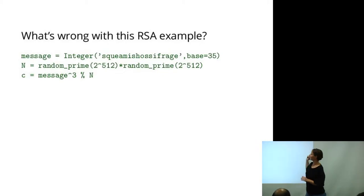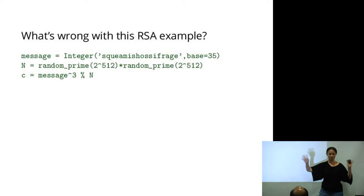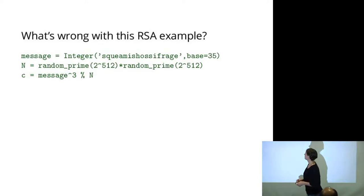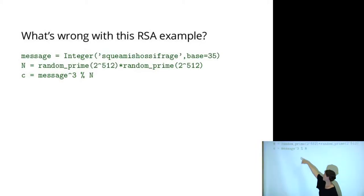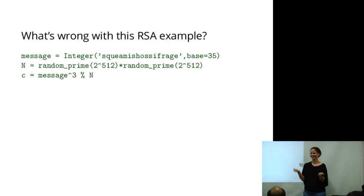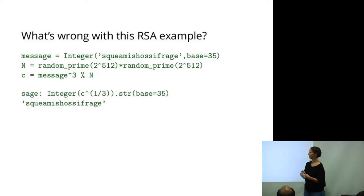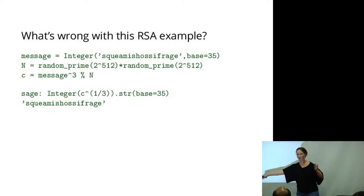Here is an example of toy textbook RSA. I take some ASCII text, transform it into an integer using base 35, and do textbook RSA encryption with exponent 3. Does anybody see a problem? The message is rather small — you can just take the cube root of the ciphertext and retrieve the original message, because the message was not long enough to actually wrap around with the modulus. I generated a 1024-bit modulus but the message is much less than that — around 300 bits.